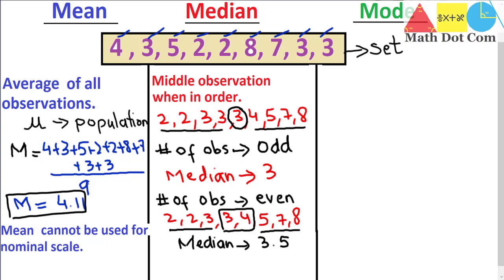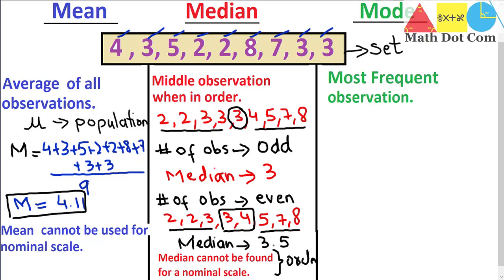Like the mean, median cannot be used for a nominal scale. The main reason is that finding the median requires ordering the data, while in a nominal scale we are not concerned with the order of data. If the data is numerical and concerned with order, we can find the median. Now moving to the mode — mode is basically the most frequently occurring observation in the given data set, the observation with the highest frequency. It is helpful to draw a frequency distribution table to find the mode.